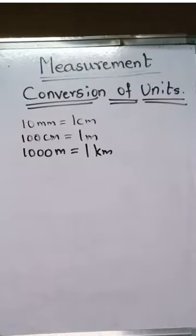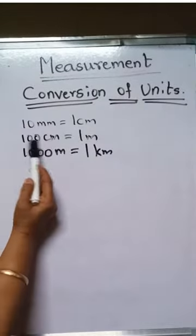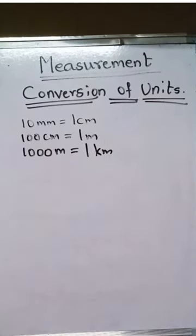In the last unit we learned that 10 mm equal to 1 cm, 100 cm equal to 1 meter, and 1000 meters equal to 1 kilometer.